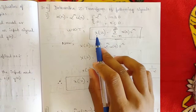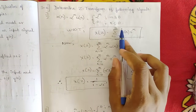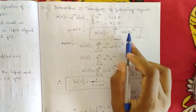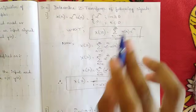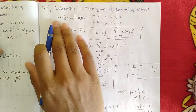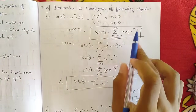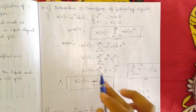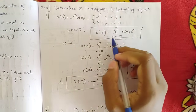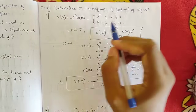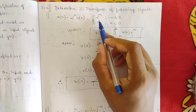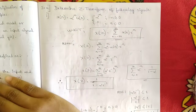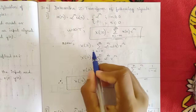According to the definition of Z transform, X(z) is given as the summation from n = −∞ to +∞ of x[n] · z^(−n). This is the basic definition to convert from time domain to Z domain. The limits are restricted from zero to infinity because the signal is zero for all n less than zero, so all negative values contribute nothing.